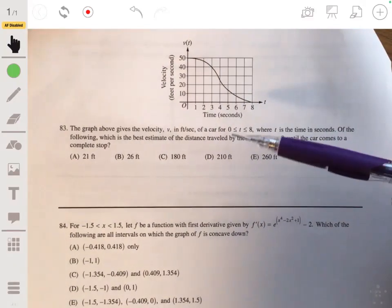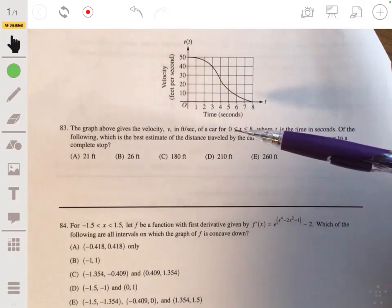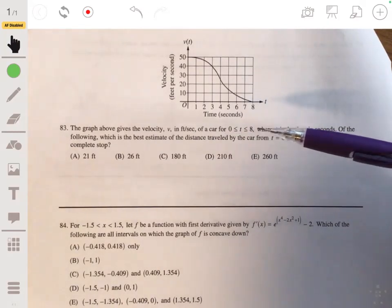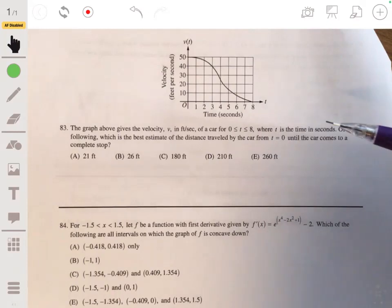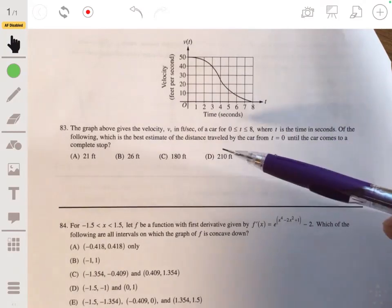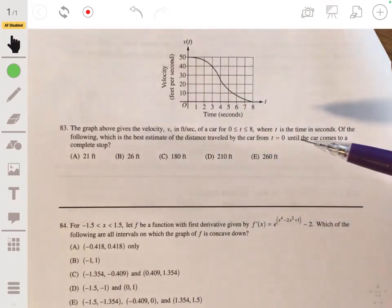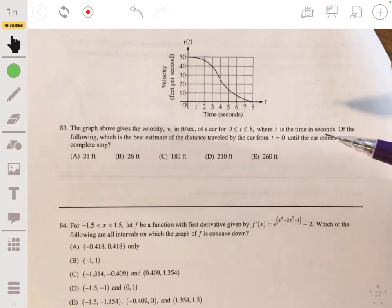All right, in 83, we have the graph that gives the velocity in feet per second of a car from t equals 0 to 8, where t is the time in seconds. It's asking which is the best estimate of the distance traveled by the car from t equals 0 until the car comes to a complete stop.